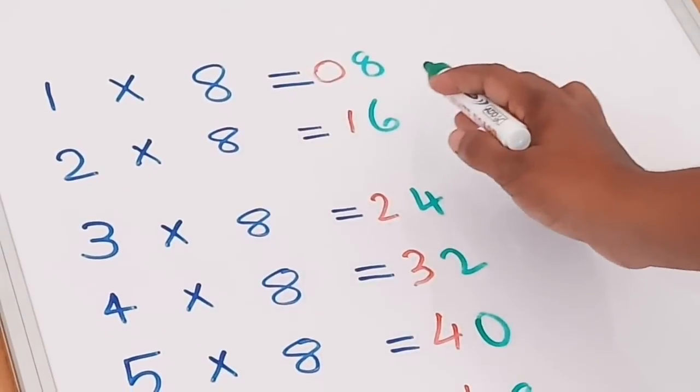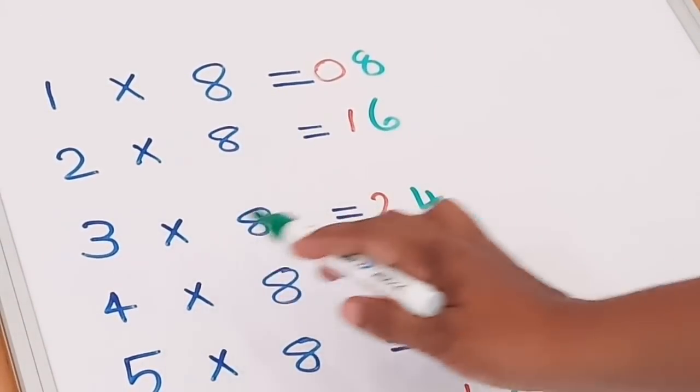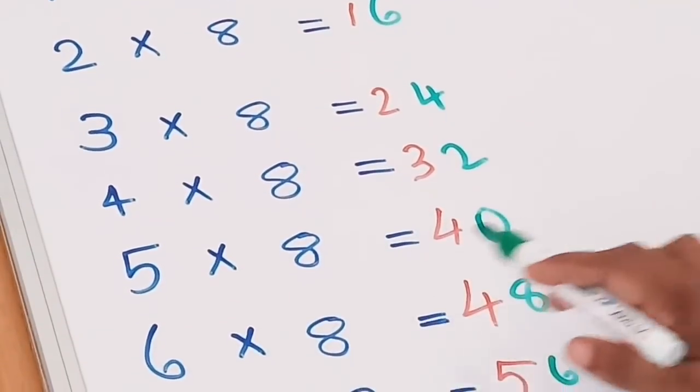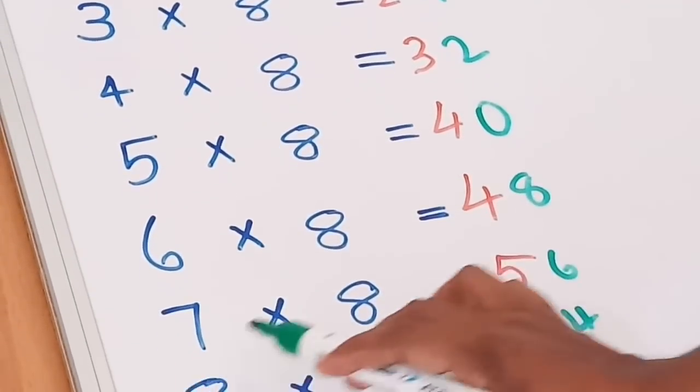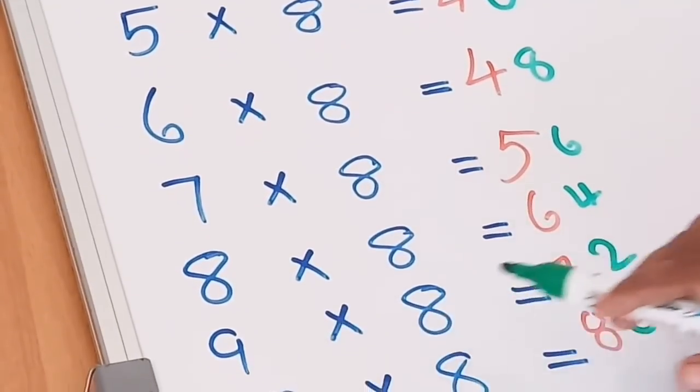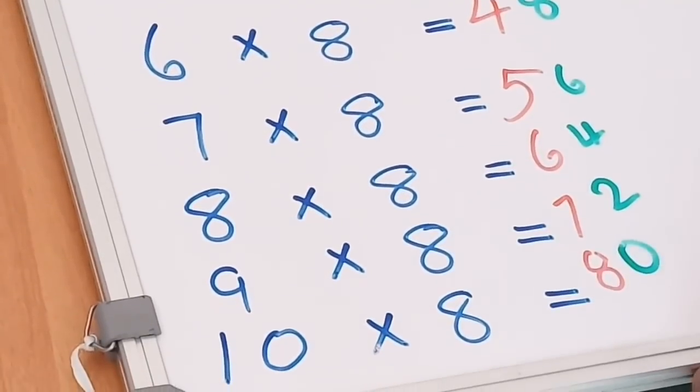1 times 8 equals 8, 2 times 8 equals 16, 3 times 8 equals 24, 4 times 8 equals 32, 5 times 8 equals 40, 6 times 8 equals 48, 7 times 8 equals 56, 8 times 8 equals 64, 9 times 8 equals 72, 10 times 8 equals 80.